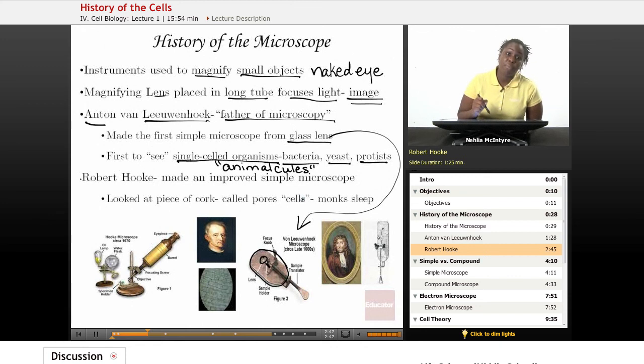Another very important scientist to the study of microscopy is Robert Hooke. Robert Hooke improved upon van Leeuwenhoek's very simple microscope. His was simple too, but it was just a little bit more refined. He used an eyepiece that had a lens, the magnifying lens, and it was attached to a long tube.